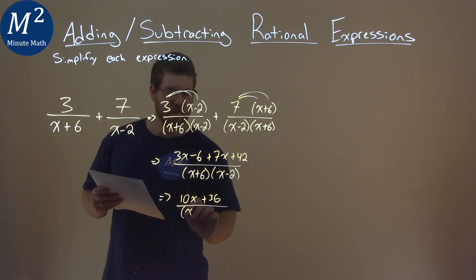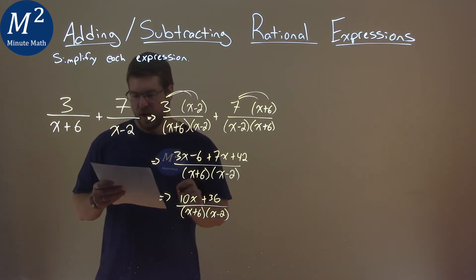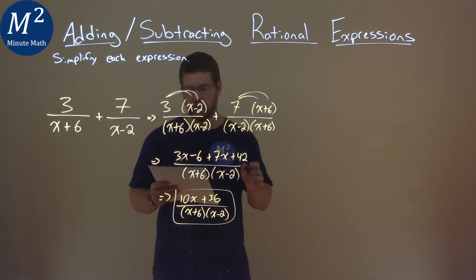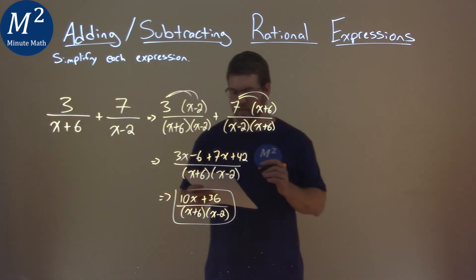That's over our denominator, x plus 6 and x minus 2 here. And this cannot simplify anymore, and so our final answer is 10x plus 36 over x plus 6 times x minus 2.